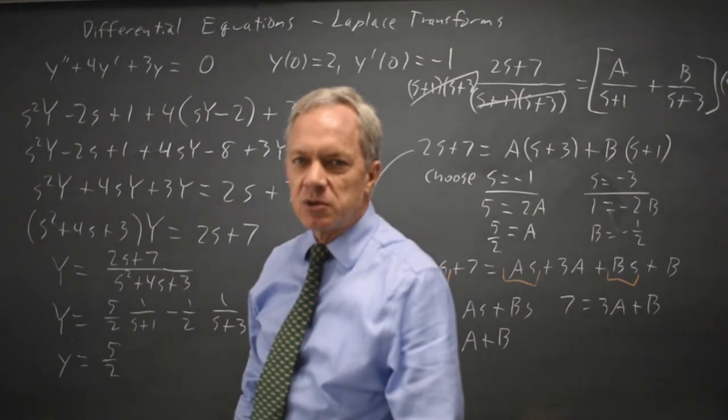Which is 5 halves. And I use a table of Laplace transforms, that is normally permitted in your differential equations class. In line 2 of my table, it says 1 over s minus A is the transform of e to the At, so this would be 5 halves e to the negative t minus 1 half. 1 over s plus 3 is the transform of e to the negative 3t.